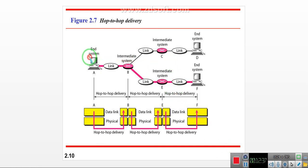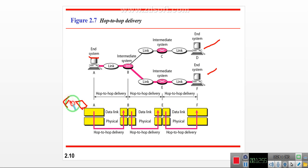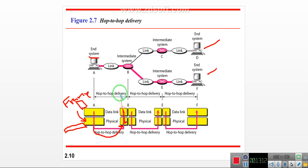As an example: data from an end user goes to the data link layer, which generates a frame. The frame is sent to the physical layer, which converts all the frame data into bits and transmits from A to B. At each hop the same physical-to-data-link process repeats, making this hop-to-hop delivery. All seven layers are actually involved, but we are illustrating data link and physical here.